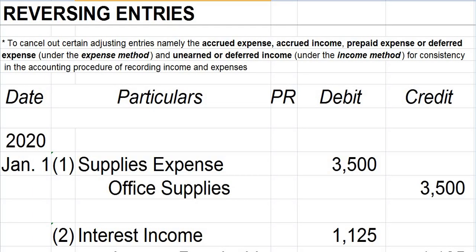On the first day of the next accounting period, accountants have the option to perform what is called reversing entries. I said option because, as discussed in Part 1, reversing entries are not mandatory. The idea behind these entries is to cancel out certain adjusting entries — namely: (1) accrued expense, (2) accrued income, (3) prepaid or deferred expense when the expense method was used in recording the advance payment, and (4) unearned or deferred income when the income method was used in recording the advance collection — for consistency in the accounting procedure of recording income and expenses. From the term reversing entries, we just have to reverse these four types of adjusting entries.